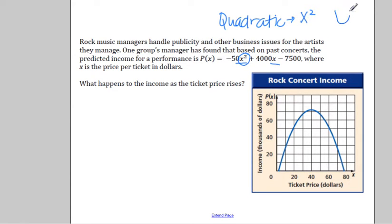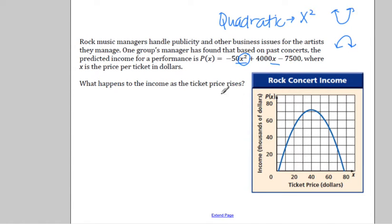Graphically, a quadratic looks like a parabola — either opening upward or downward. Remember that U-shape; they're called parabolas. It's also called a quadratic function. So we want to look at what happens to the income as the prices rise.